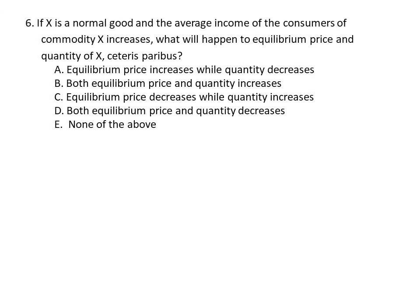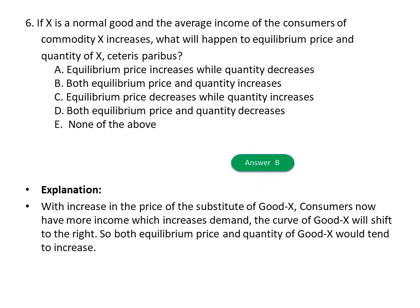Question six: If X is a normal good and the average income of consumers of commodity X increases, what will happen to equilibrium price and quantity of X? A) Equilibrium price increases while quantity decreases, B) Both equilibrium price and quantity increase, C) Equilibrium price decreases while quantity increases, D) Both equilibrium price and quantity decrease, E) None. The answer is B. Explanation: With increased income, consumers demand more of normal good X, shifting the demand curve to the right, so both equilibrium price and quantity increase.